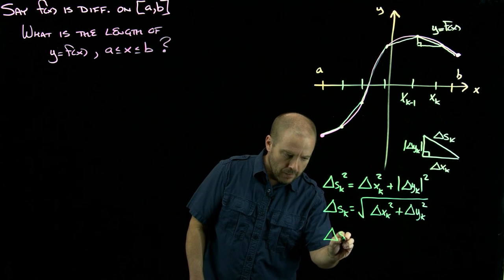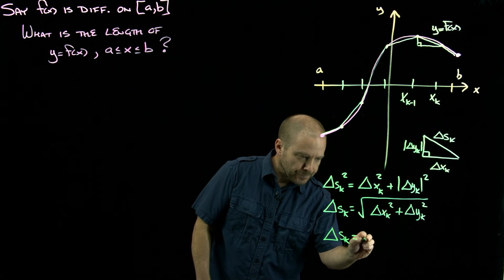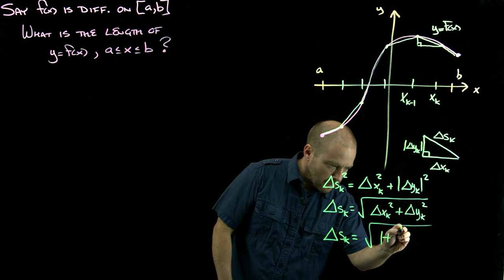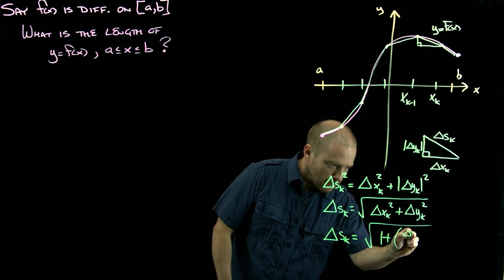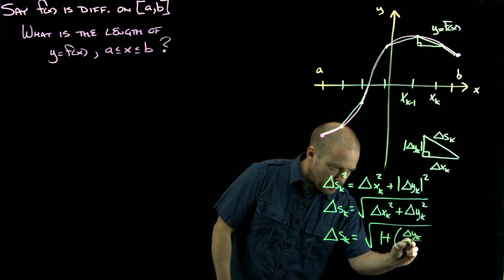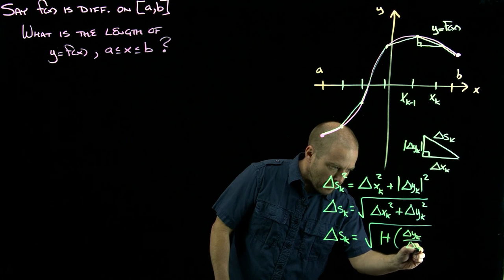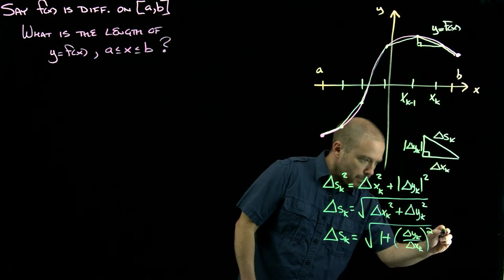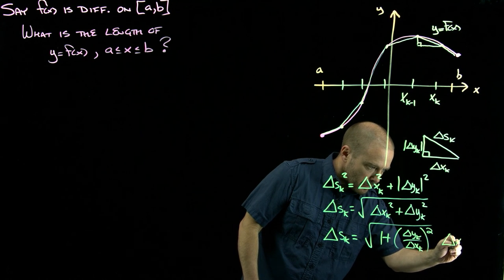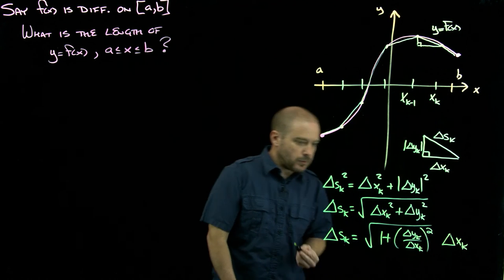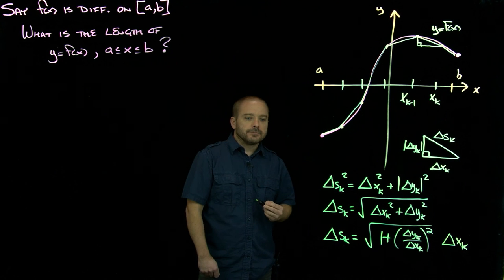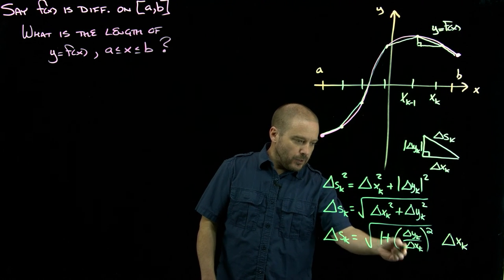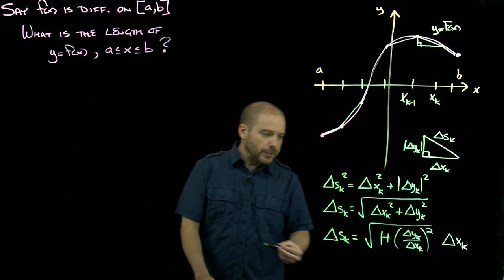My first step is to get the delta x sub k out of that square root. So that's one plus, when we divide through by our delta x sub k squared, we would have that, and then outside of the square root, that's just delta x sub k.